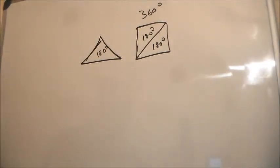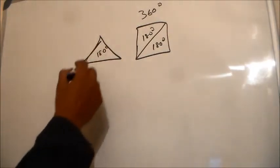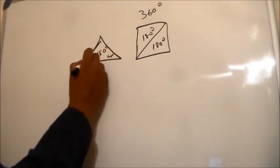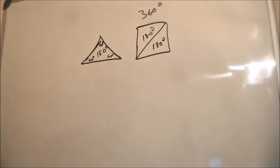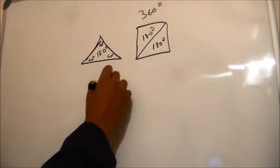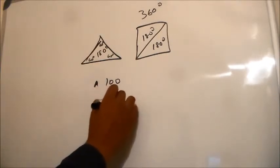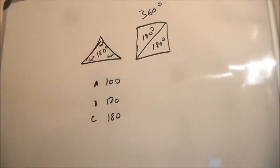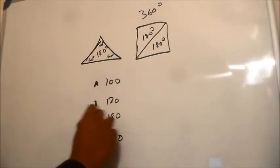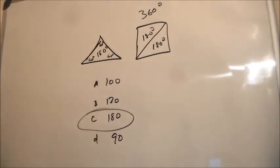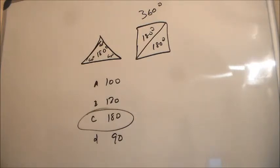So what is the total number of degrees in the three angles of a triangle? If it were an equilateral triangle, each angle would be 60 degrees, totaling 180 degrees. Answer A was 100, B was 120, C was 180 — our correct answer — and D was another incorrect option. The answer is 180 degrees. That was question one, which was relatively easy. I'll do all these questions in short clips so you can jump around. Thanks for watching.